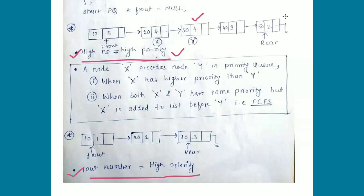The rule we follow is: node X precedes node Y in the priority queue when X has a higher priority than Y. For example, node 10 with priority 5 is before node 20 with priority 4. The second case is when X and Y have the same priority but X was added before Y — so 20 appears before 30 because 20 entered the queue first.